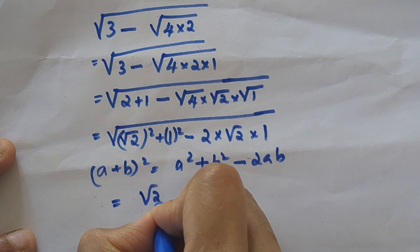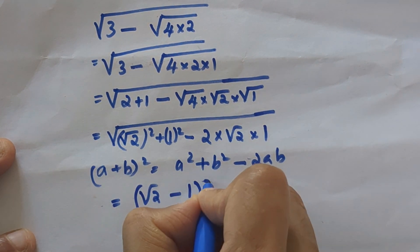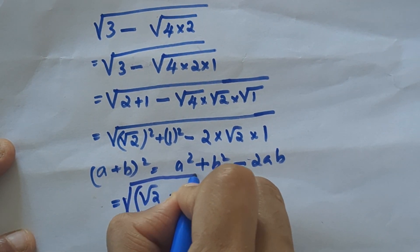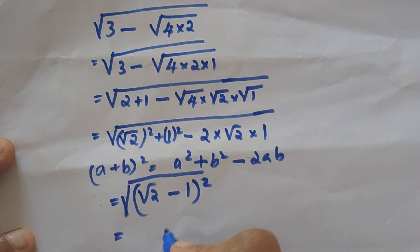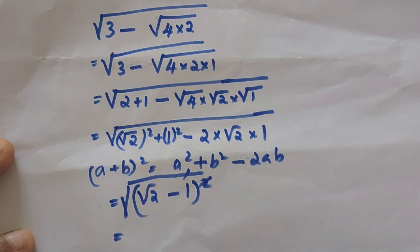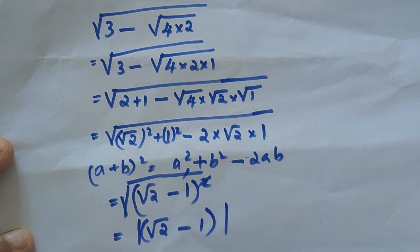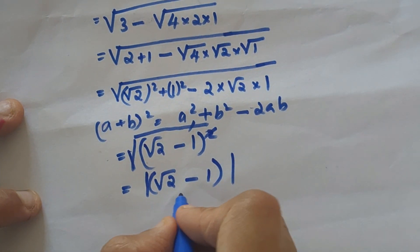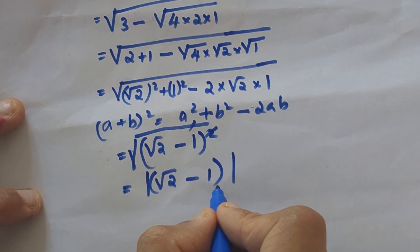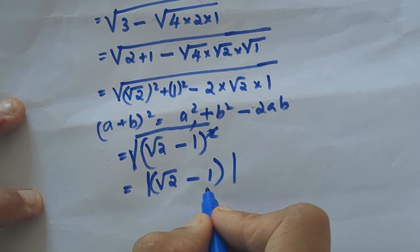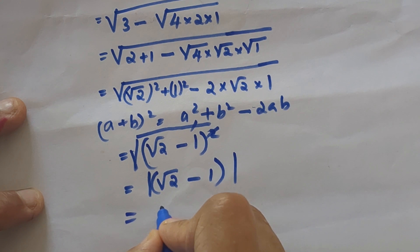So root 2 minus 1 the whole square under the square root. The root and square cancel, we get the absolute value of root 2 minus 1. Here it is clear root 2 is greater than 1, so it will always be positive, so we can write root 2 minus 1.